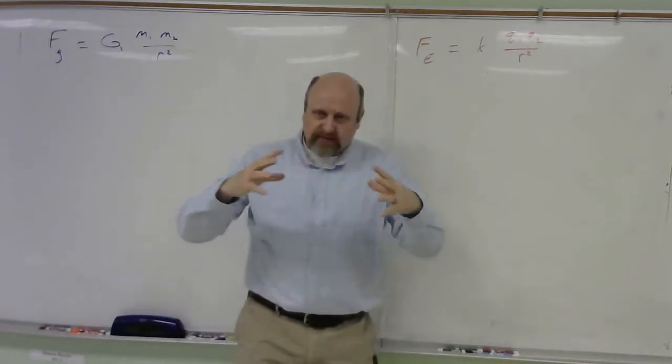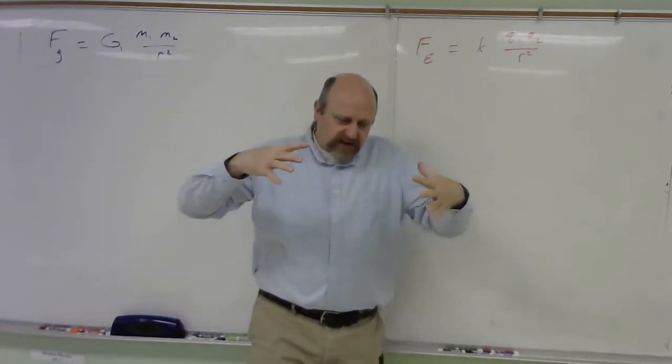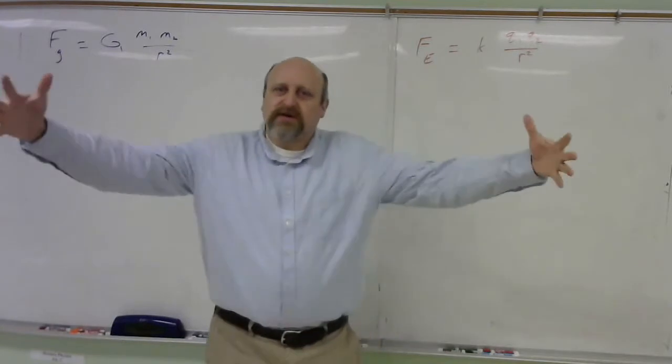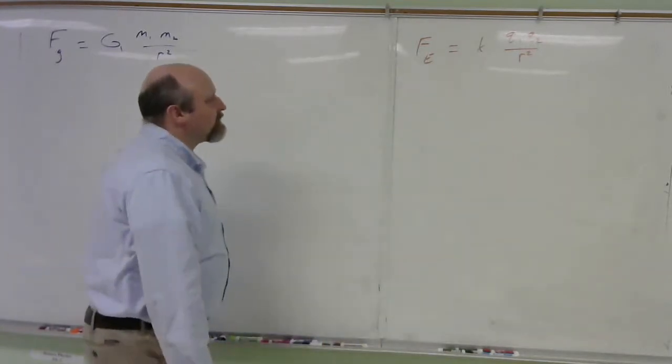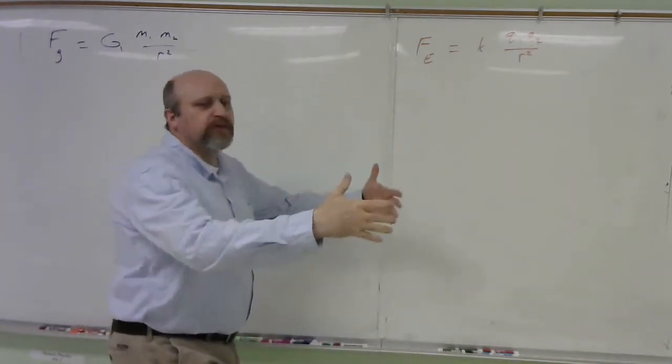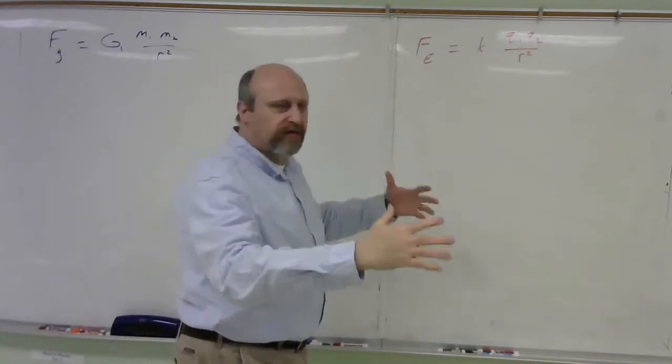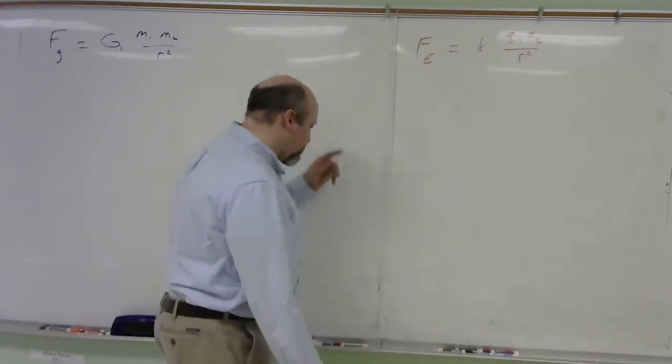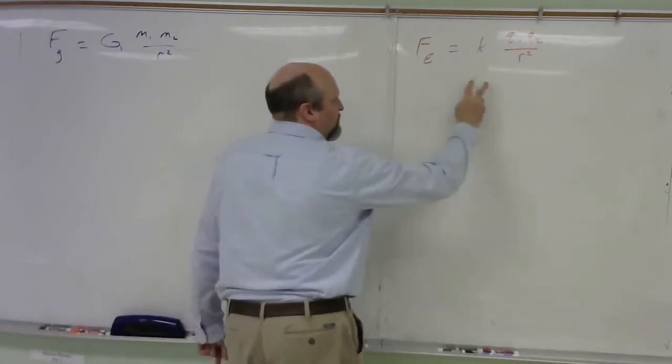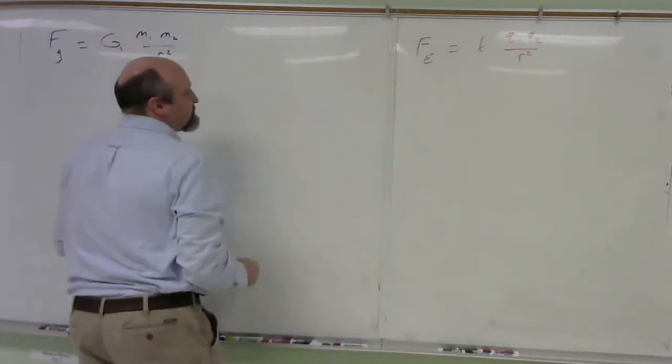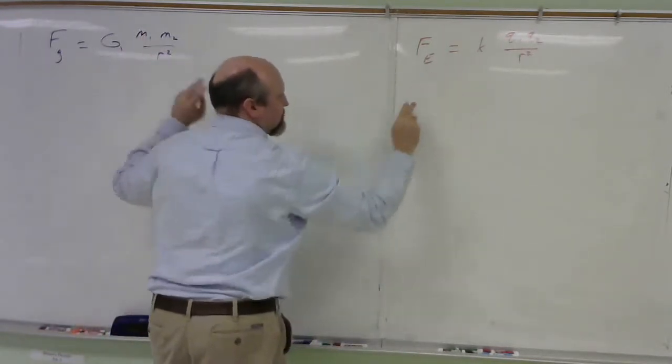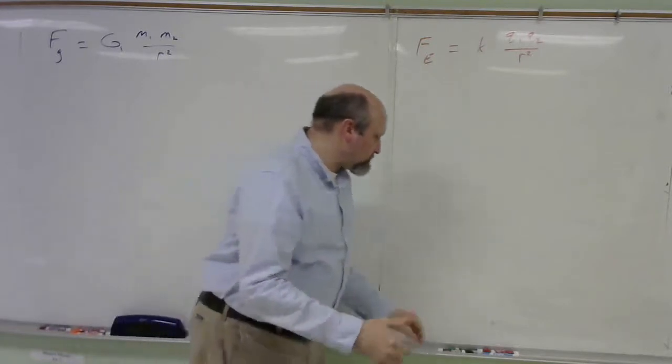Because of the way those influences have to spread out in three dimensions, as they spread out, the influence spreads out over a bigger, bigger surface area sphere. So my intensity of the field drops with one over the surface area of a sphere, one over four pi r squared. But anyway, this depends on charges, this one depends on masses. And of course, we're going to have different constants to make the units work out right. But that's basically the same setup.